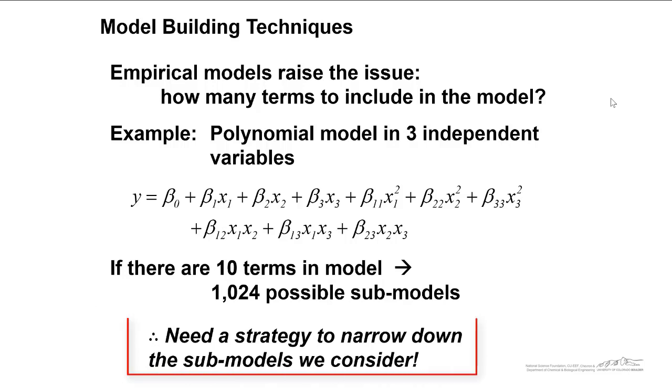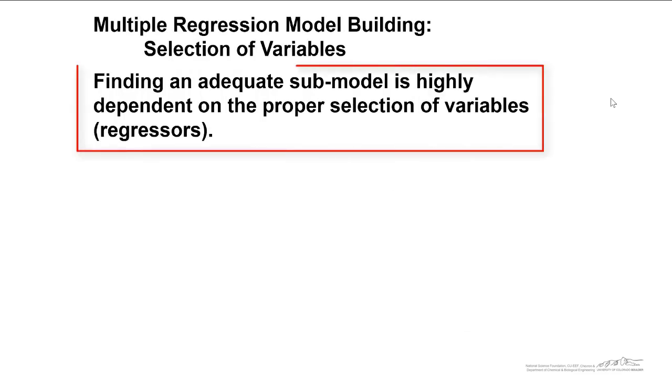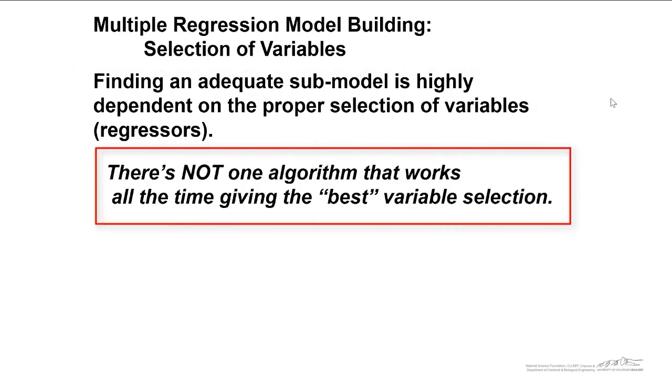We definitely need a strategy to narrow down the submodels that we consider, and this is where model building techniques come into play. Finding an adequate submodel is highly dependent on the proper selection of regressor variables. There's not one algorithm that works all the time giving the best variable selection. In fact, the example that I'm going to go through today, it turns out that there are at least a couple of good models that will work, so there's not always a correct answer to model selection.